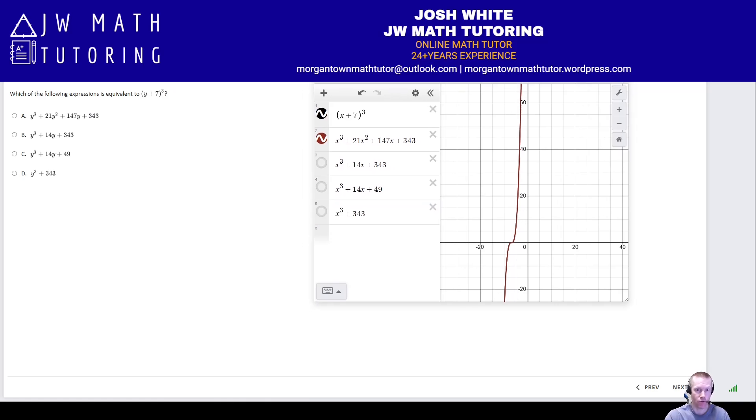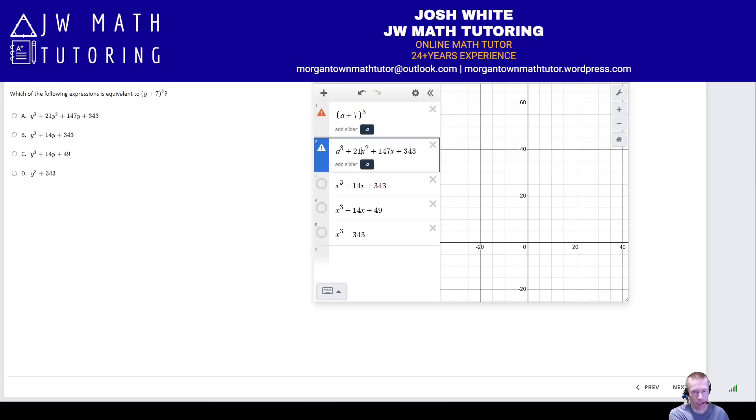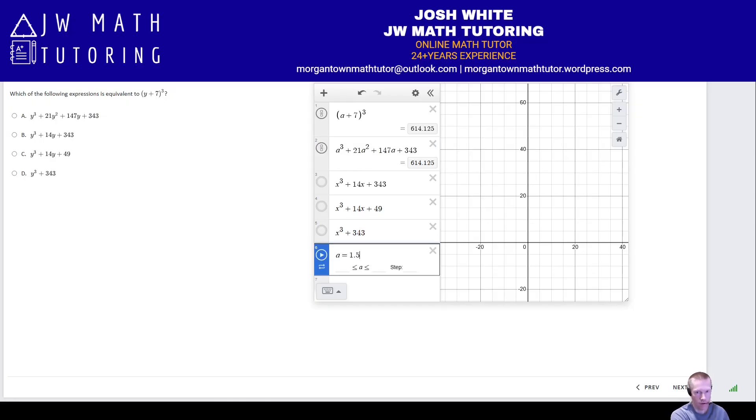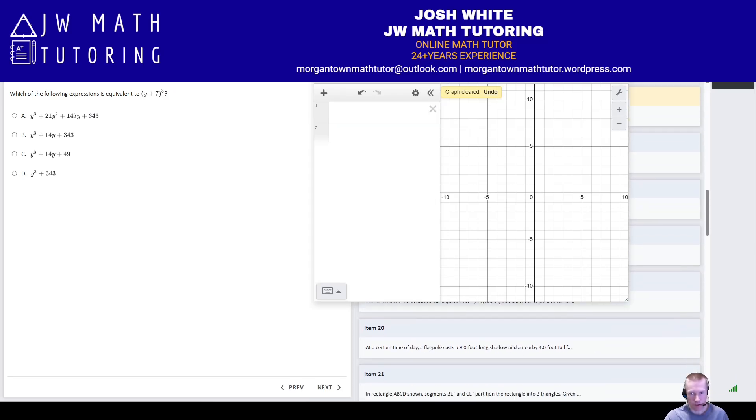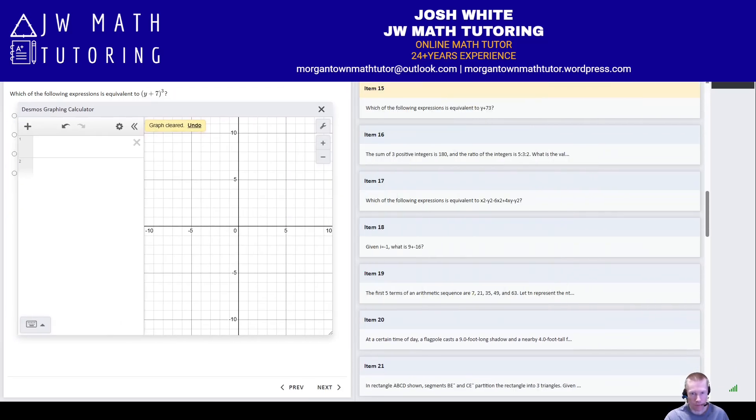You could also do this with numerical values as well if you think that's easier. If you, say, change this to an a, and then you did everything with an a, and then you add a slider for a, and you're looking for which expression gives the same exact value as the original one. Okay, so that is one example where Desmos is very useful. All right, let's clear all that out. Next, let's go to question number 19.